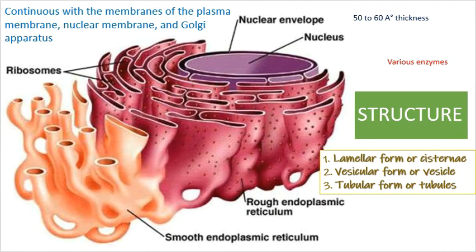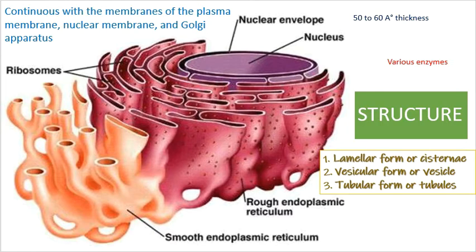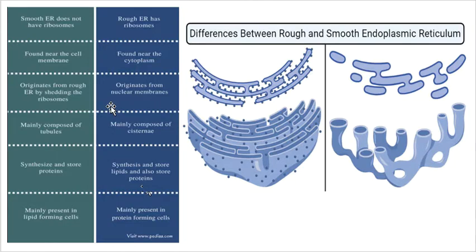The tubules are branched structures forming the reticular system along with the cisternae and vesicles. They usually have a diameter of around 50 to 190 micrometers and occur in almost all cells. The tubular form of endoplasmic reticulum is often found in smooth ER and is dynamic in nature, associated with membrane movements, fusion, and fission between membranes of the cavity network.